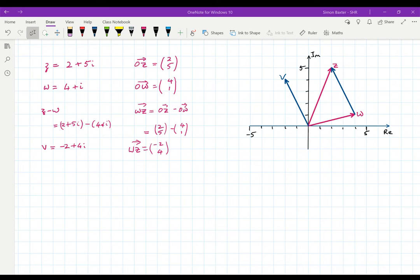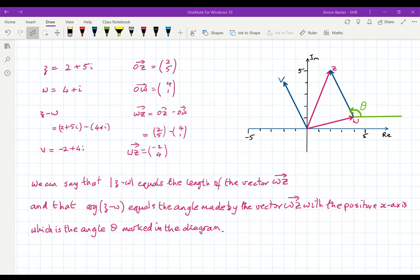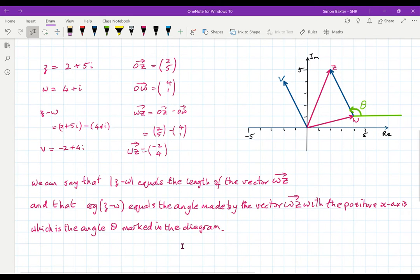I could always show that the complex number Z minus W corresponded to the vector WZ. And so we can say that the modulus of Z minus W is equal to the length of the vector WZ, or the distance from W to Z.